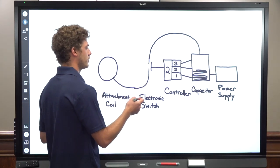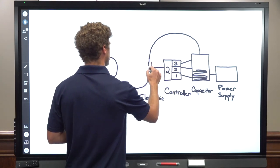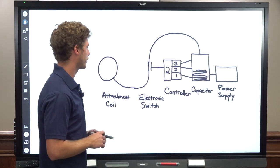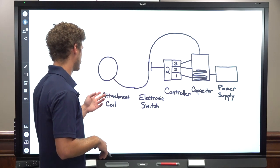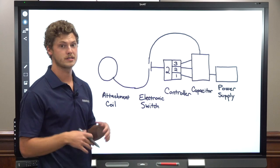When the capacitor reaches the correct threshold for the set power level, it closes an electronic switch and all of the capacitor's energy is transferred to the attachment coil. At this point, the capacitor is emptied and the process starts over again.